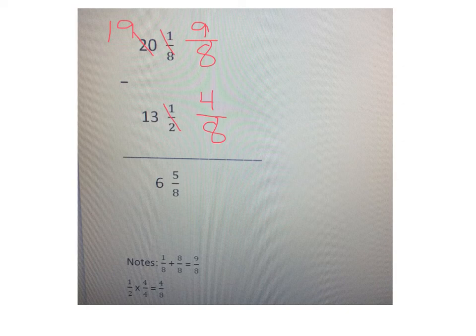So 20 and 1 eighths is the same as 19 and 9 eighths. And now I can subtract 9 eighths minus 4 eighths equals 5 eighths in my fractions column, and in my whole numbers column, 19 minus 13 is 6. So the width of that space is 6 and 5 eighths inches.